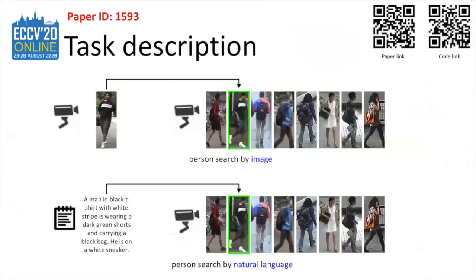Person Search by Natural Language aims at finding a target person in a large-scale image pool that matches given textual descriptions. Compared with image-based person retrieval, searching by textual descriptions provides the user with great flexibility because open-form natural language is more easily accessible than image source.